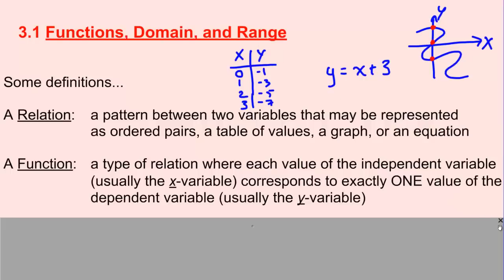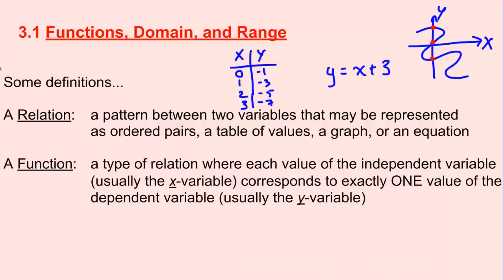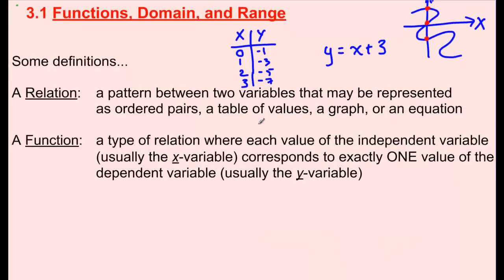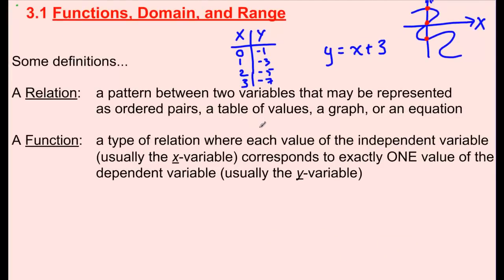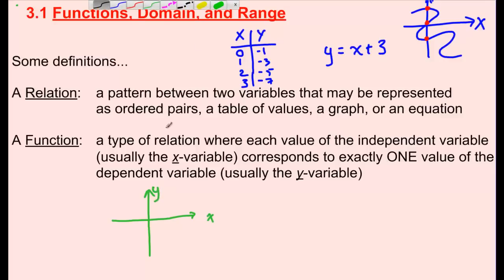Let me draw a graph of something we could call a function. Let's get another set of axes here and draw a neat little curve. By definition, a function is a type of relation where each value of the independent variable — any x value — only corresponds to one y value. Let's pick some random x values and check.